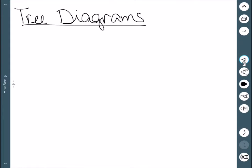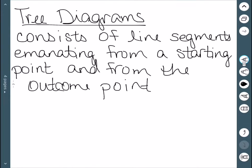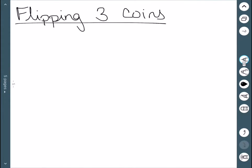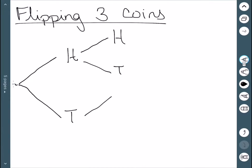The next thing we'll look at that can be very helpful in probability is a tree diagram. A tree diagram consists of line segments that emanate from a starting point and from the outcome points. We'll consider the experiment of flipping three coins. Tree diagrams always start at a single point, and we have a line for each possible option. We could have heads or tails for the first coin, and the second coin could also be heads or tails, with a branch off of each of the original ones.